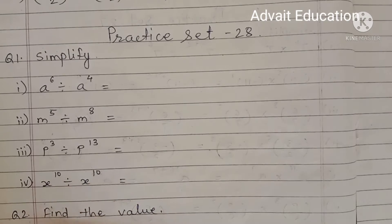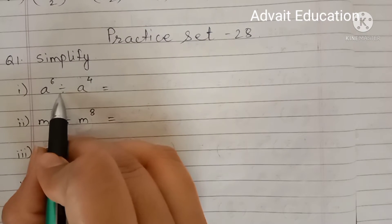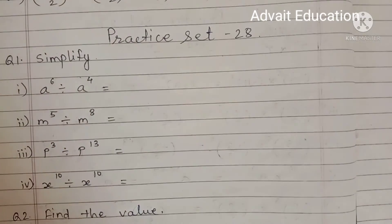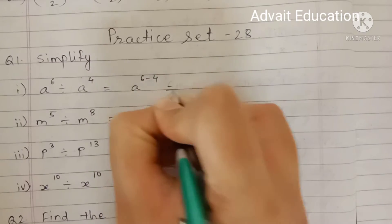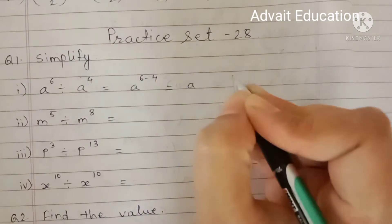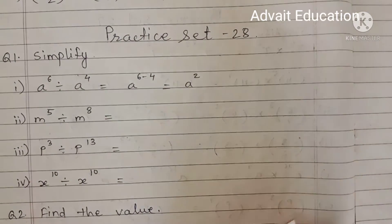A raised to 6 divided by A raised to 4. When division is there, you can subtract the index. Means A raised to 6 minus 4. 6 minus 4 means 2. Means your answer is A raised to 2.